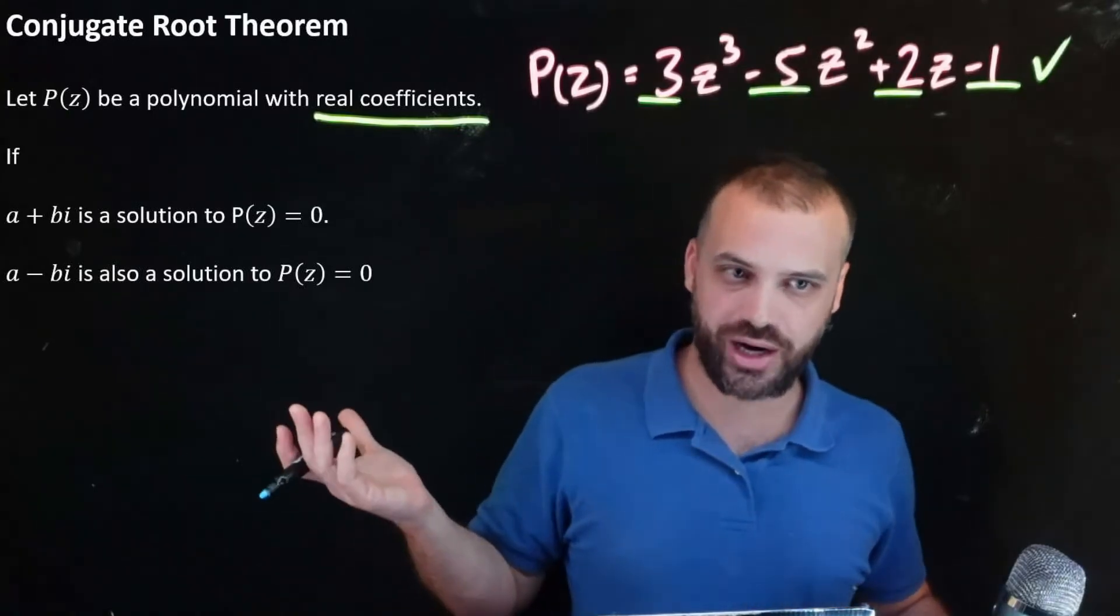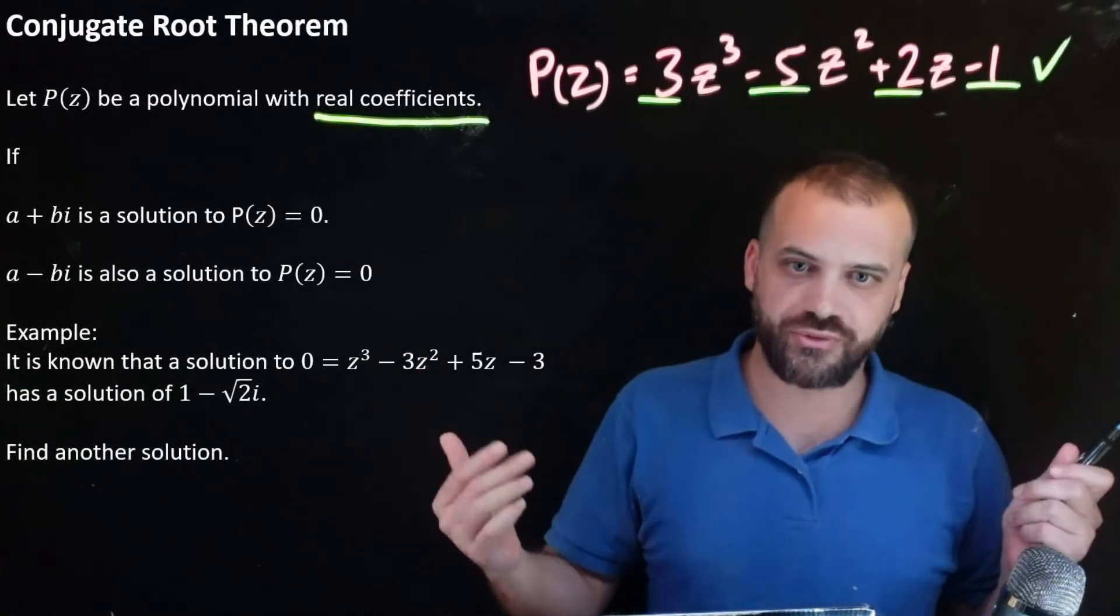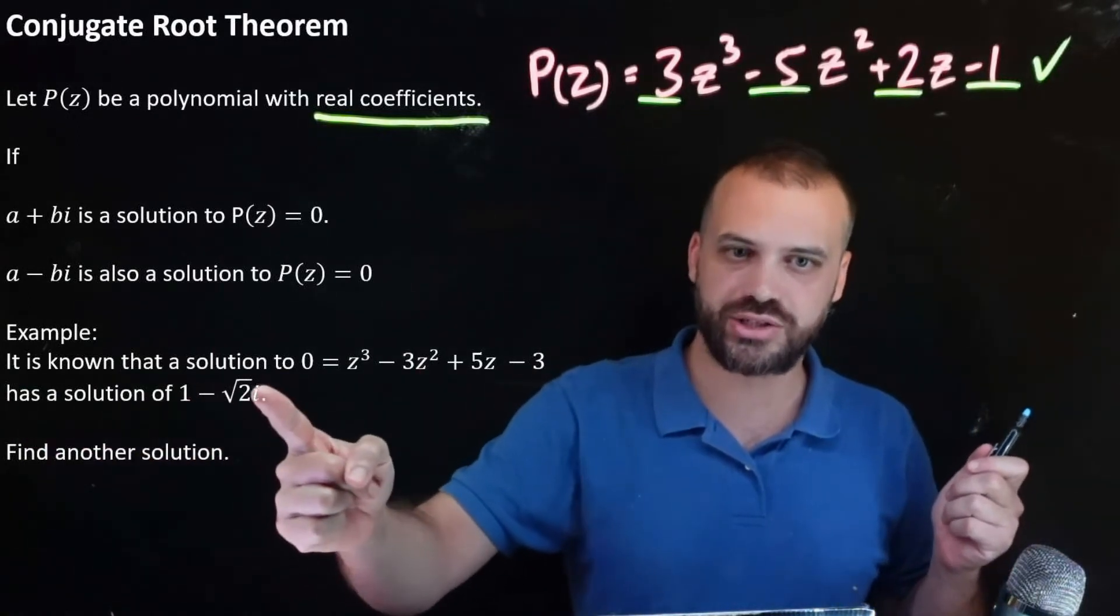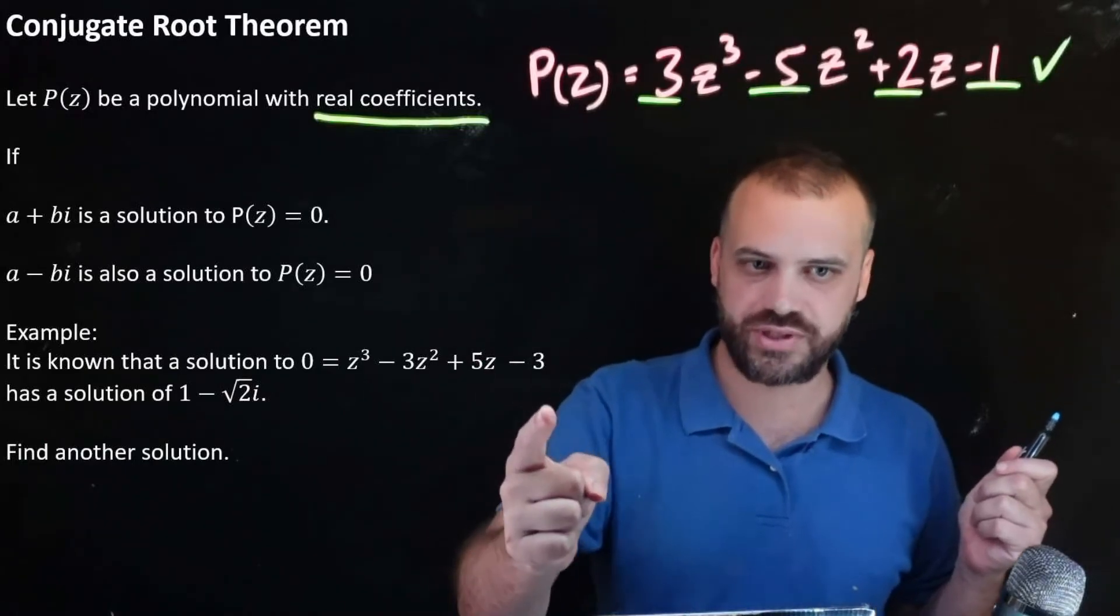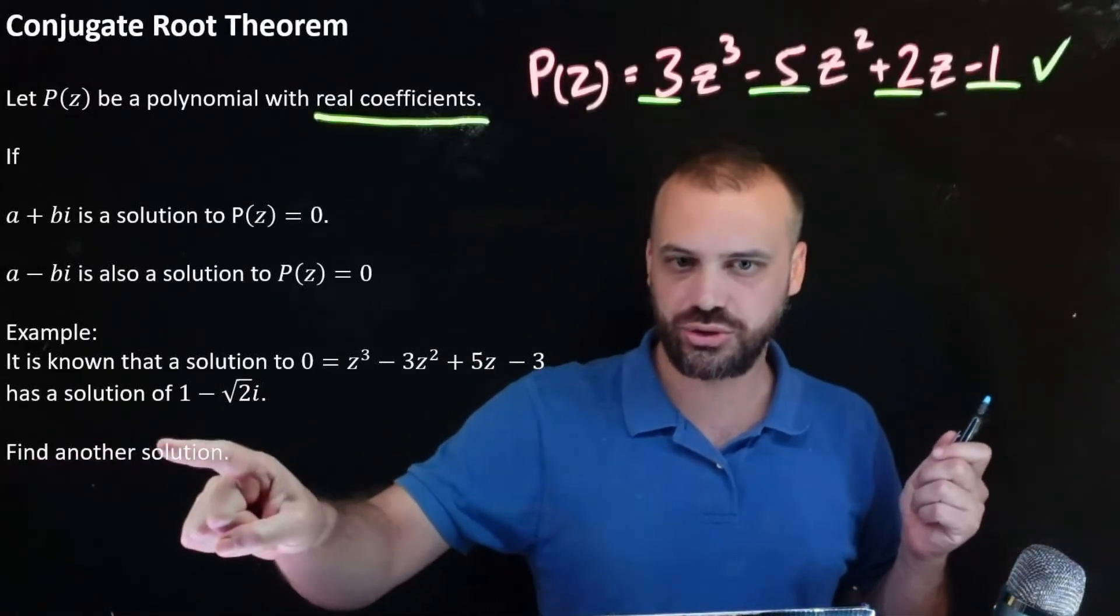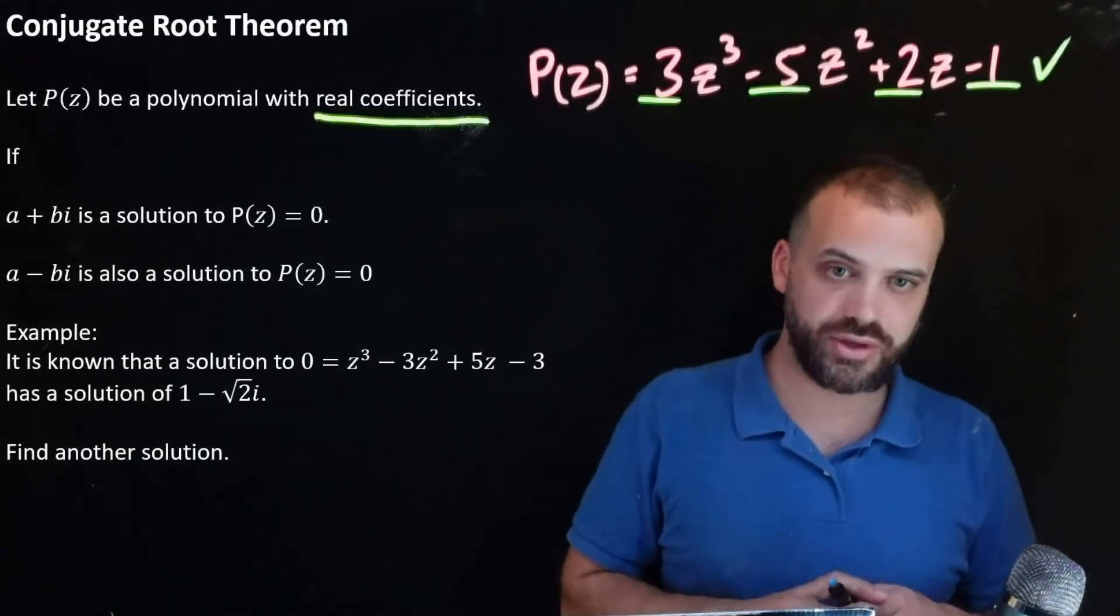What does that mean in practice? Well here's an example. It is known, so someone's already done some maths for us, and it is known that a solution to 0 = z³ - 3z² + 5z - 3 has a solution of 1 - √2i. Find another solution.